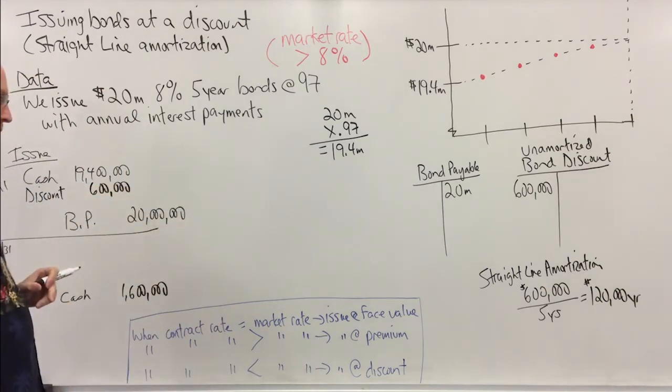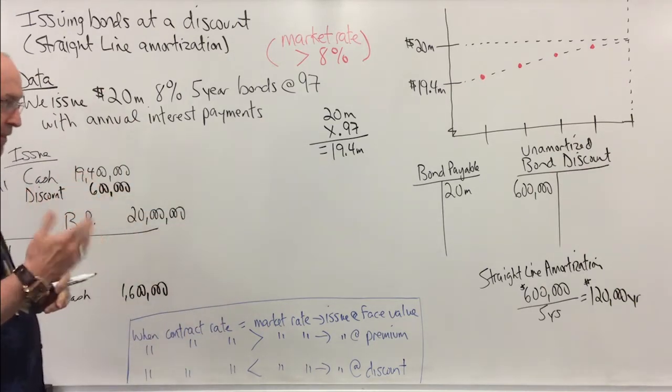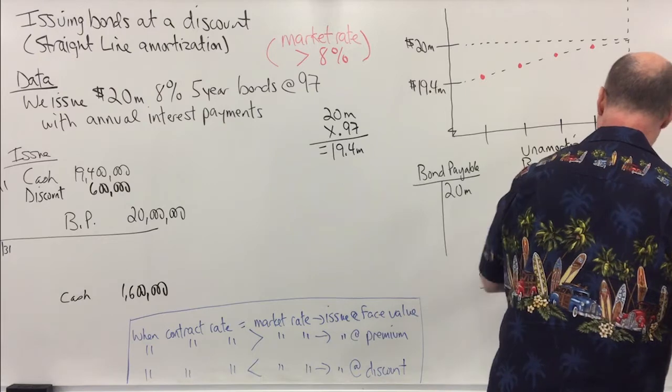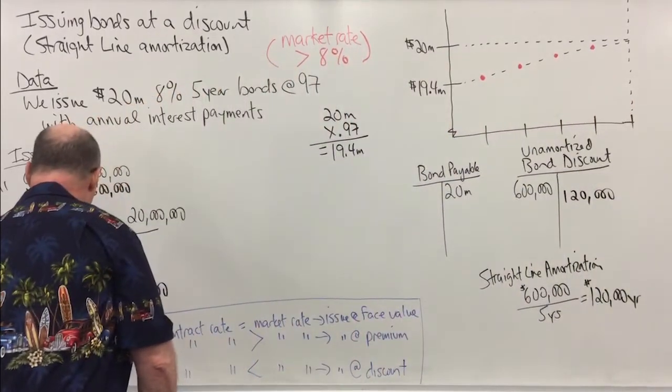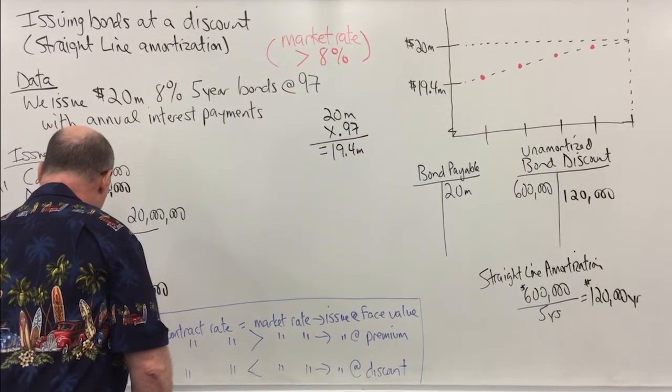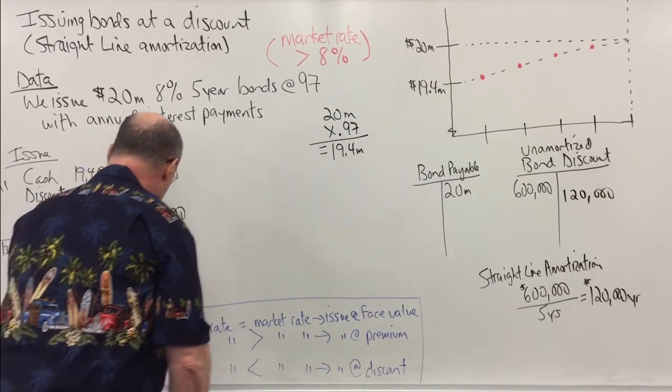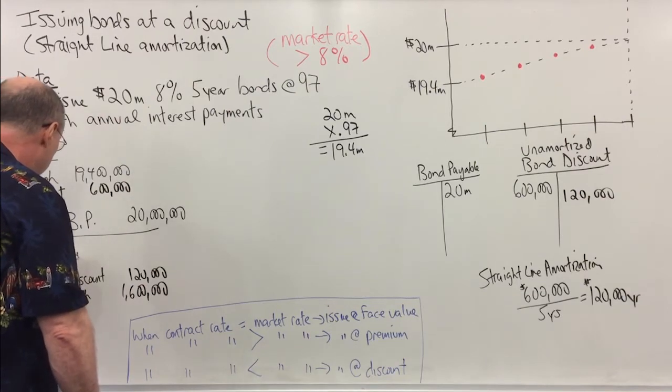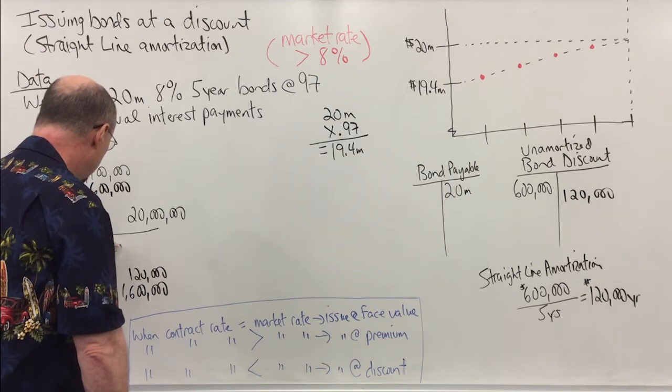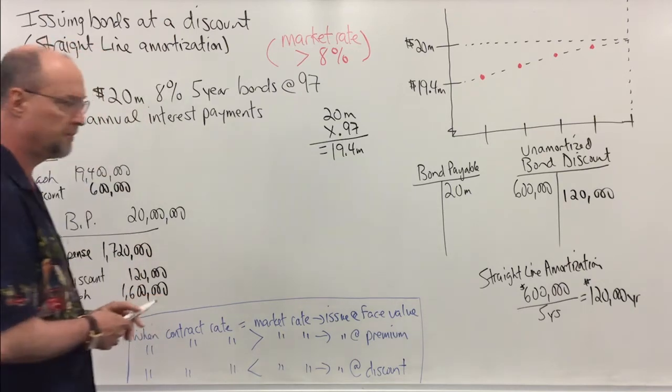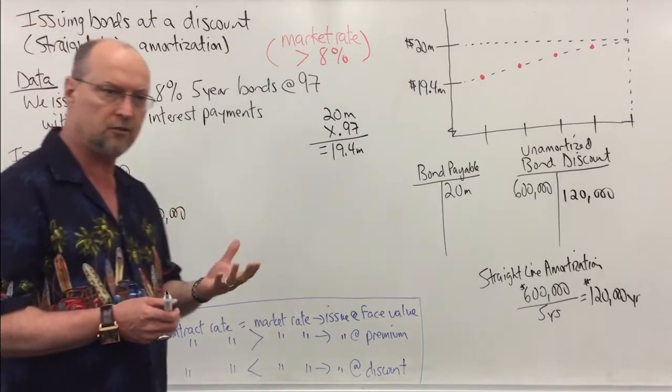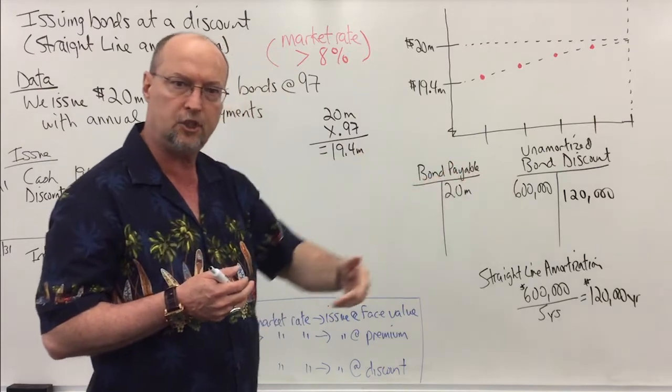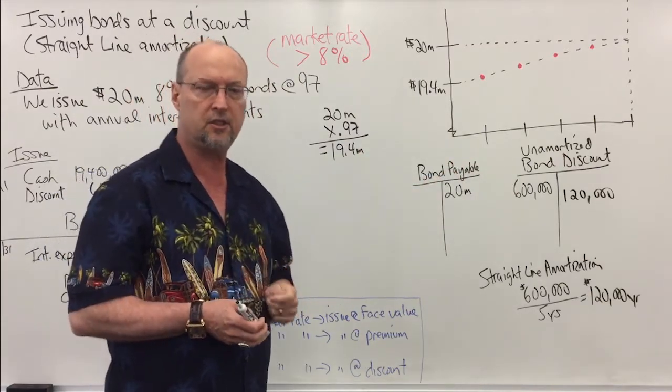Now I'm going to amortize the bond one-fifth for each year, so I'm going to credit the discount for $120,000. So I'll put bond discount, just going to put discount here, $120,000. And I'm going to debit interest expense for $1 million $720,000. Okay, and so that extra $600,000 that we have to pay back, we allocated over five years, and each year we increase the interest expense that we report on the income statement by $120,000.